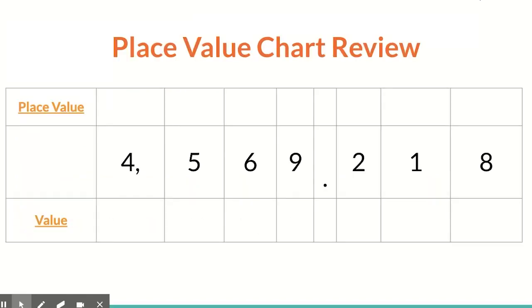Before we get started, we're going to go over a place value chart, going back over some names of place values and looking at values. We're going to start with any number to the left of the decimal point, because those are the place values most common that we work with. If we look at the nine, the nine is what we call the ones place, and if we have nine ones, the value of those nine ones is nine.